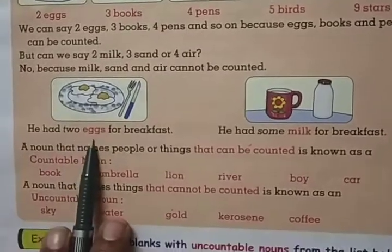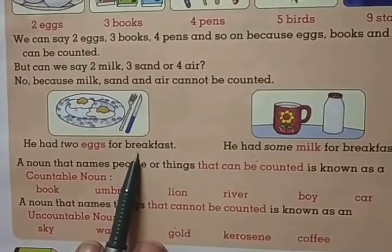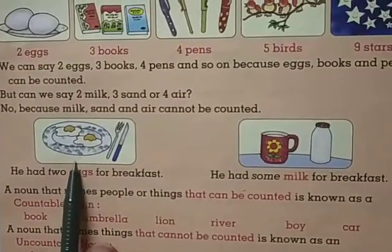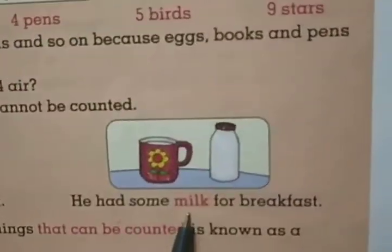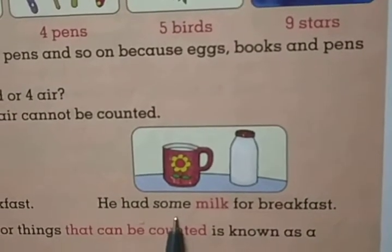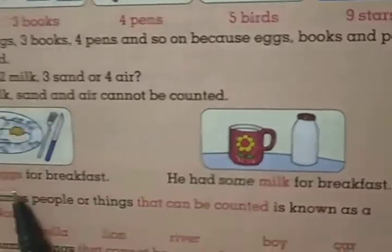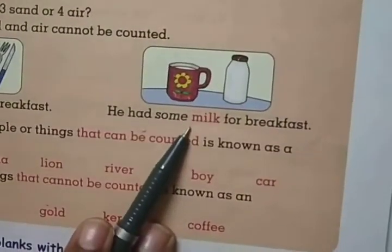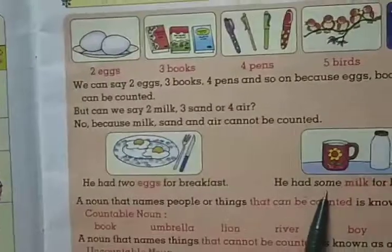For example: 'He had 2 eggs for breakfast.' Here, we can say 2 eggs. And another example: 'He had some milk for breakfast.' Here a number is not given — not 1 milk or 2 milk. Instead, 'some milk' is used. So where we cannot count, we use 'some' instead of a number.